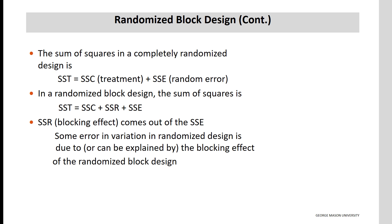The sum of squares in a completely randomized design are as follows. SST, total sum of squares, is equal to SSC, sum of squares due to the treatment, plus SSE, sum of squares due to random error.